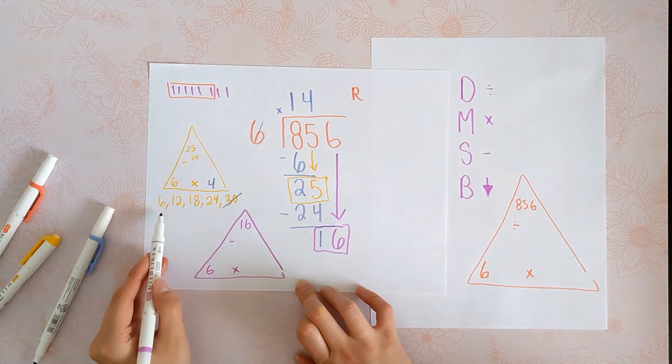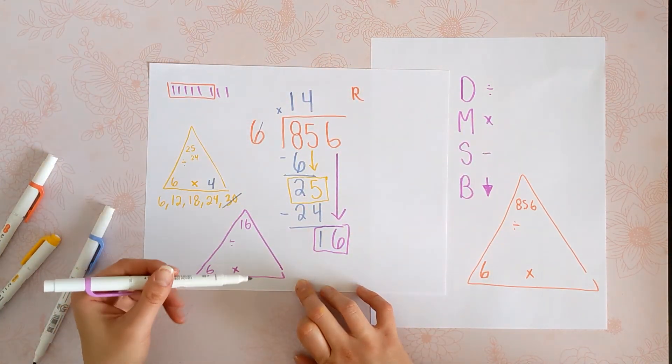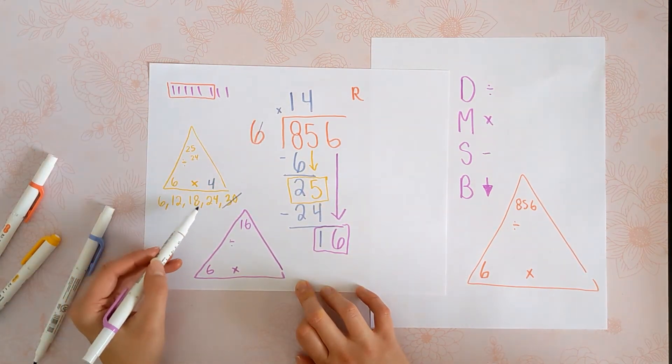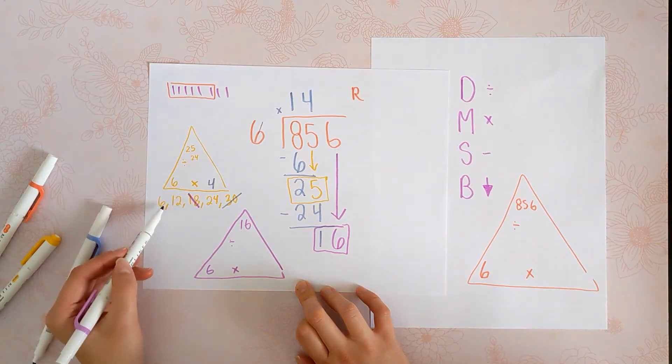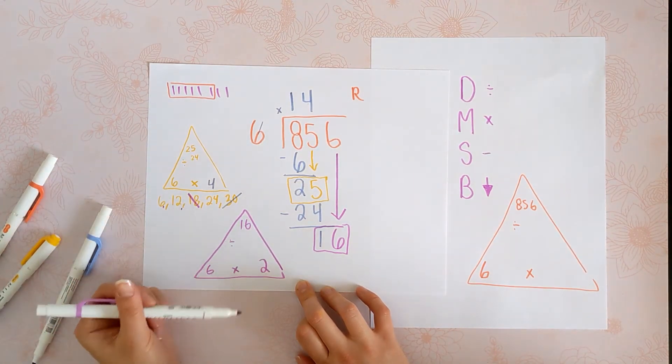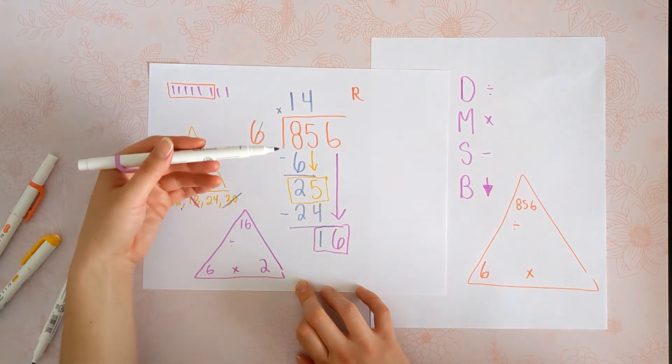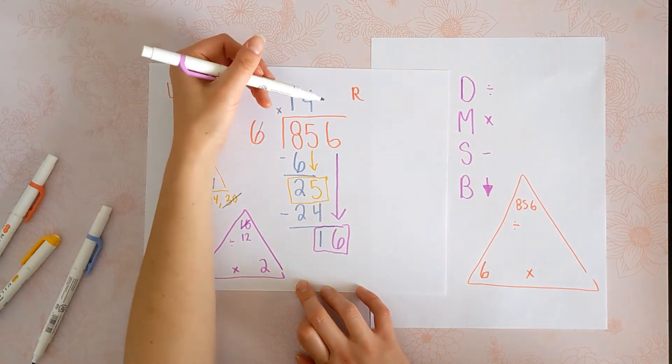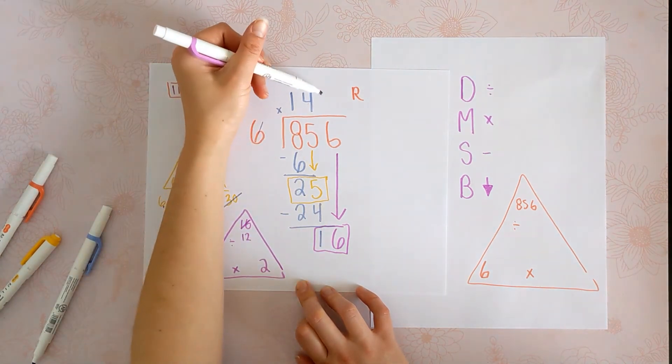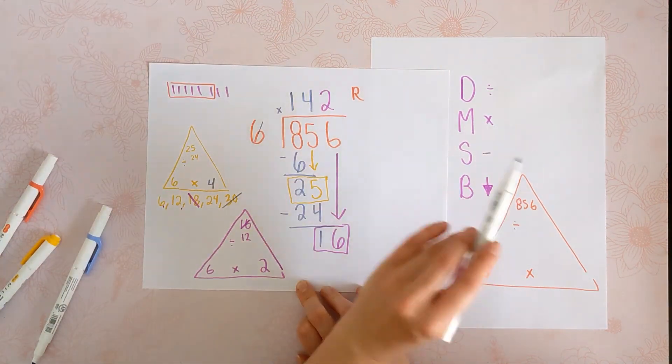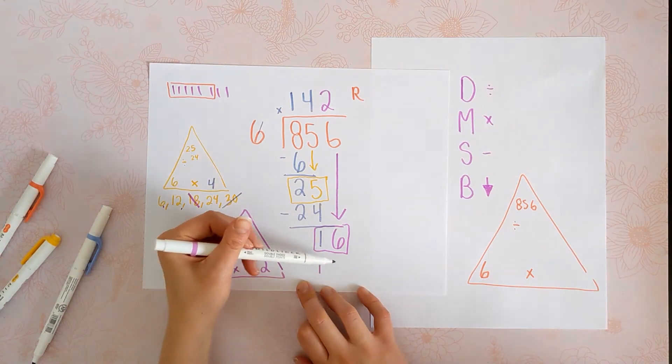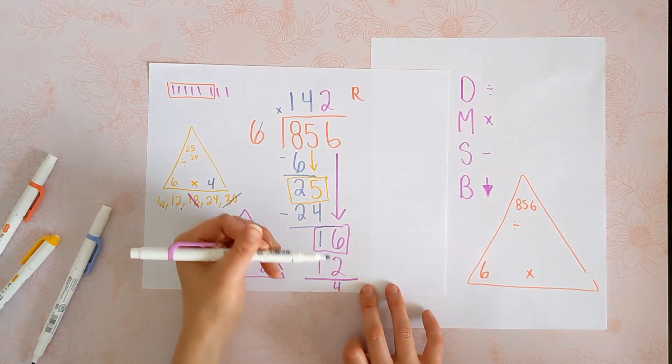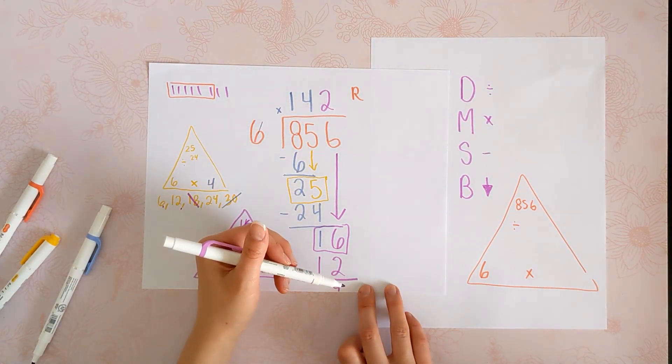Cool thing about this is if you've skip counted your 6s one time, you can just look back at that because we're using the 6 the whole time. So 6, 12, 18—we went over. So 6 times 2 is the closest we can get to 16. Put the 2 up here. Now we'll keep going. Multiply. 2 times 6 is 12. Subtract. 16 minus 12 is 4.